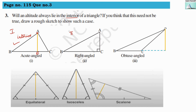For the right angle triangle, the altitude is the side AC itself, so it is on the triangle, not in the interior region. For the obtuse angle triangle, altitude AD is outside the triangle. For the equilateral triangle and the isosceles triangle, the altitude is in the interior region. So we can note that acute angle, equilateral, isosceles, and scalene triangles have their altitudes in the interior region of the triangle.